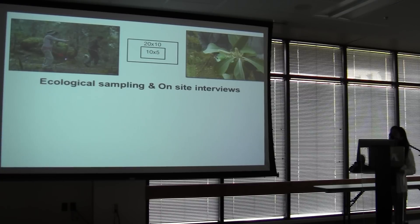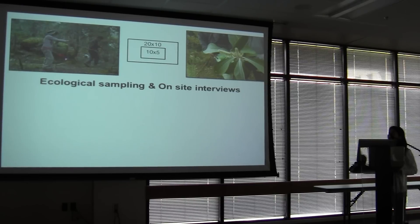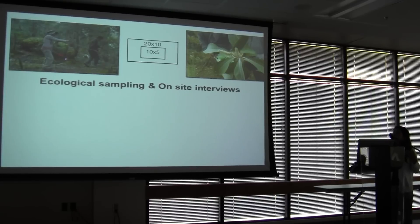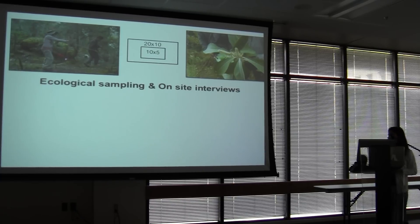Based on these maps, I established 108 ecological plots in various forest patches. Trees were recorded in 20 by 10 meter square plots with greater than or equal to 10 centimeter DBH — diameter at breast height. Shrubs and tree saplings were recorded in 10 by 5 meter square plots nested within the 20 by 10 meter square plots.